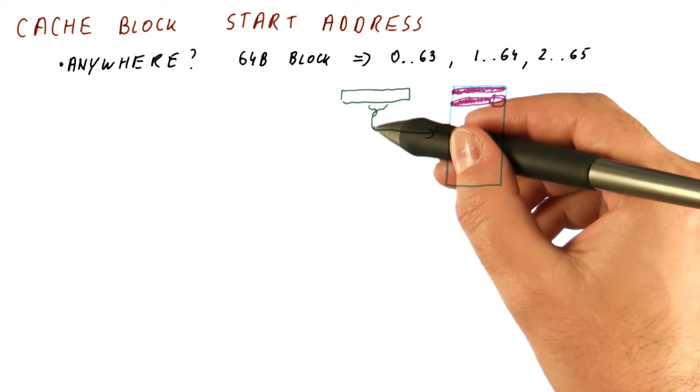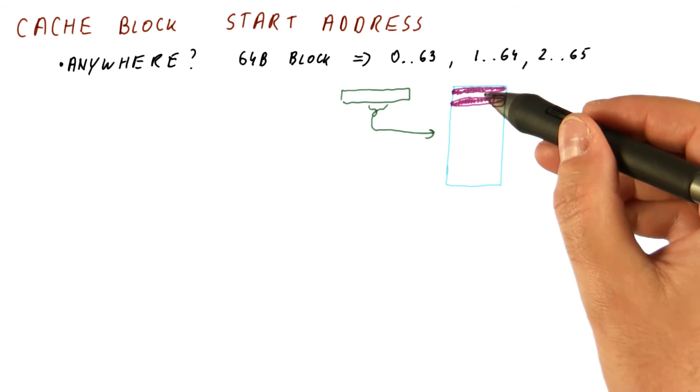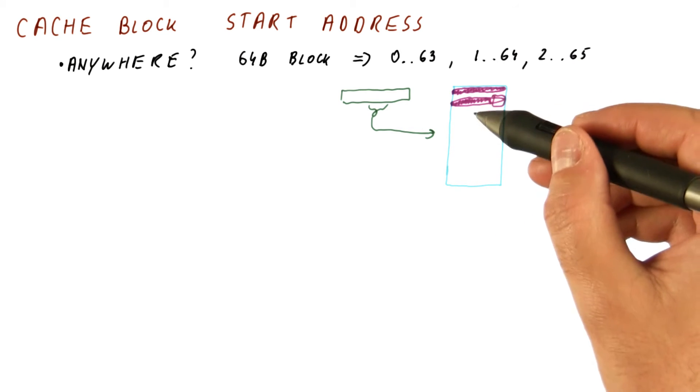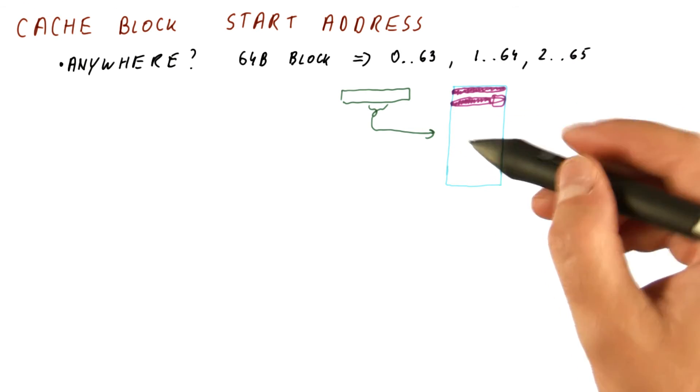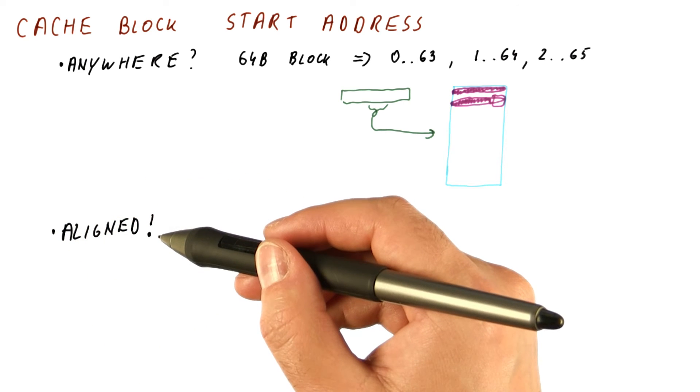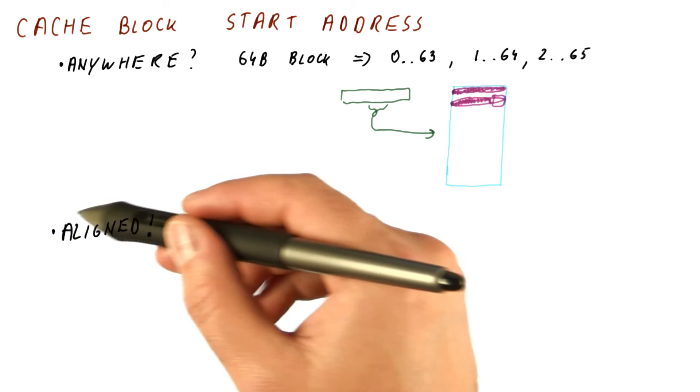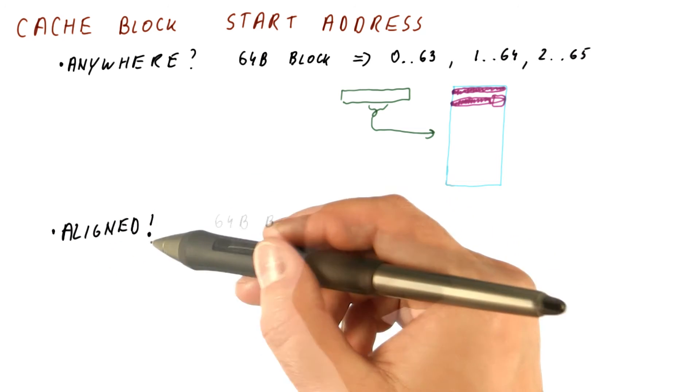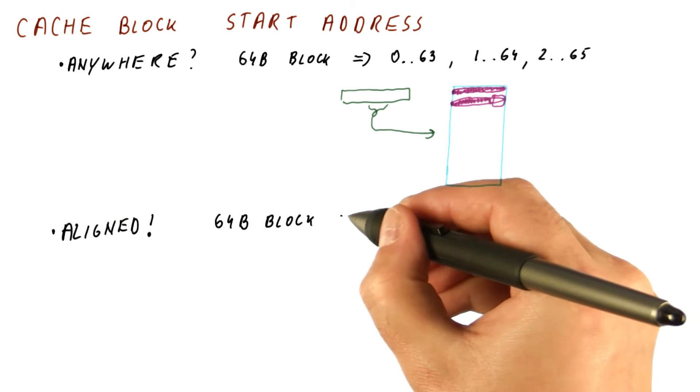So in order to both reduce the complexity of accessing the cache and eliminate the problem of this repetition of stuff in the cache, we will only have caches where the blocks start at block aligned addresses.